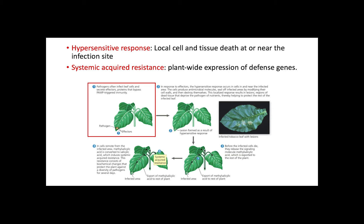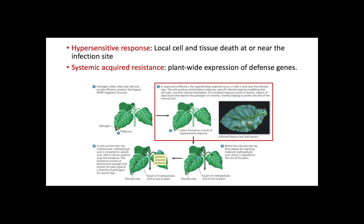Let's see how this works. Pathogens infecting plants will secrete effectors which will bypass PAMP-triggered immunity. In response to these effectors, plants will produce antimicrobial molecules, modify their cell walls, and destroy the infected sites by the formation of lesions. The dead tissue will deprive the pathogen of nutrients and help stop the spread of the pathogen.